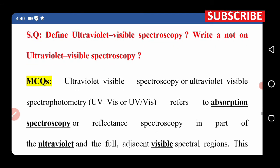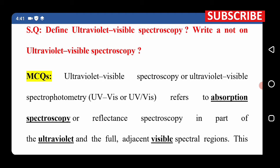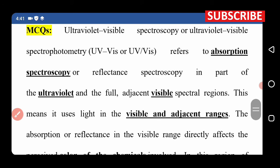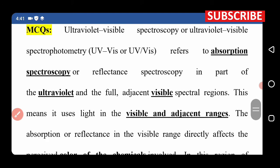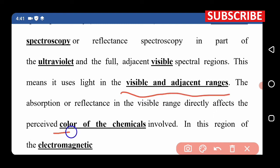Ultraviolet visible spectroscopy refers to absorption spectroscopy. It is part of the ultraviolet region, meaning it involves light in the visible and adjacent range. The absorption or reflectance in the visible region directly affects the perceived color of chemicals.